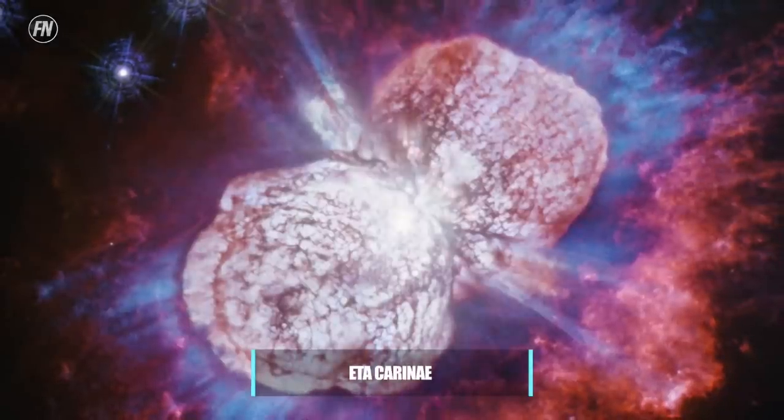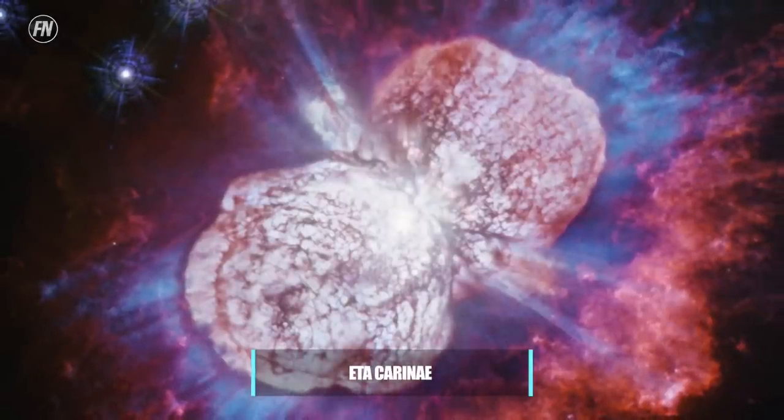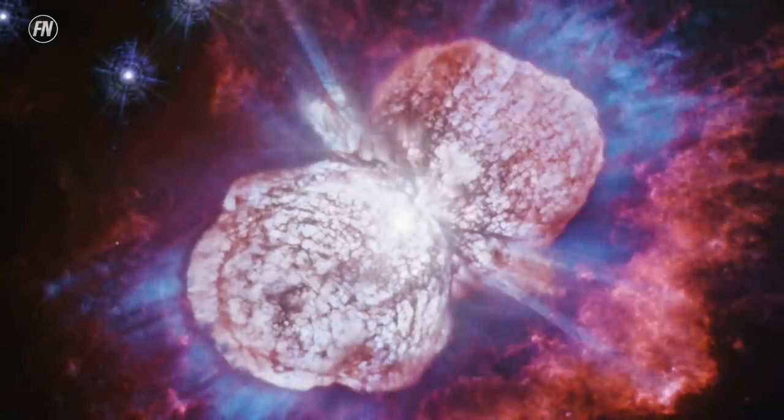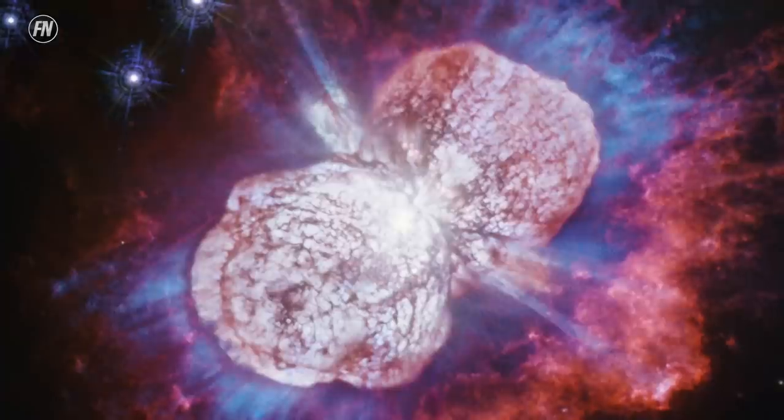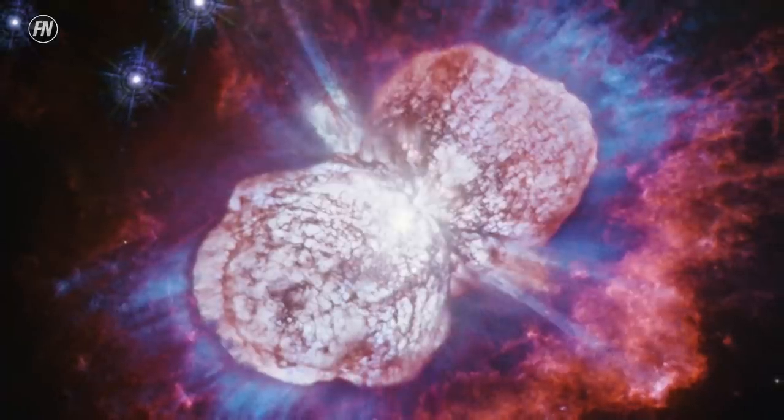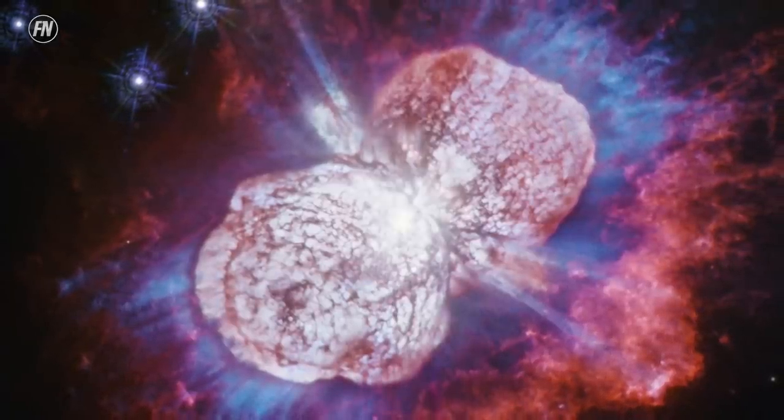Eta Carinae. No, it's not a baboon's rear end. It's Eta Carinae, a supermassive star with a bad temper. It's prone to violent outbursts, ejecting a huge amount of core material, forming two bright, magnesium-rich clouds.